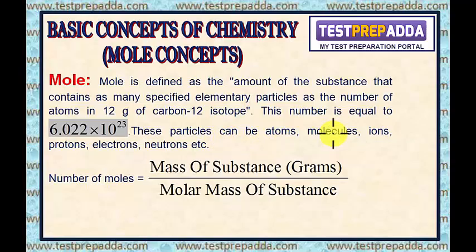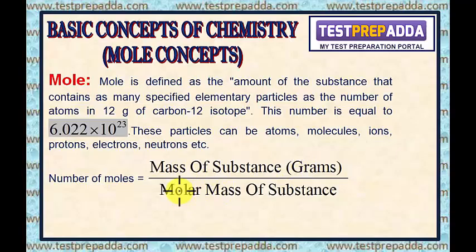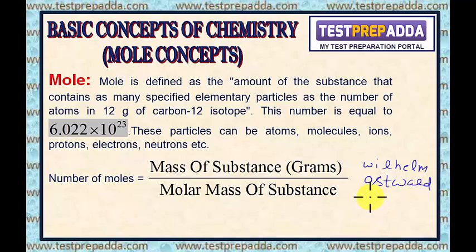These particles can be atoms, molecules, ions, protons, electrons, neutrons, etc. The number of moles can be found by dividing the mass of the substance (in grams) by the molar mass. This word 'mole' was introduced by Wilhelm Ostwald and was derived from the Latin word 'moles', meaning heap or pile.